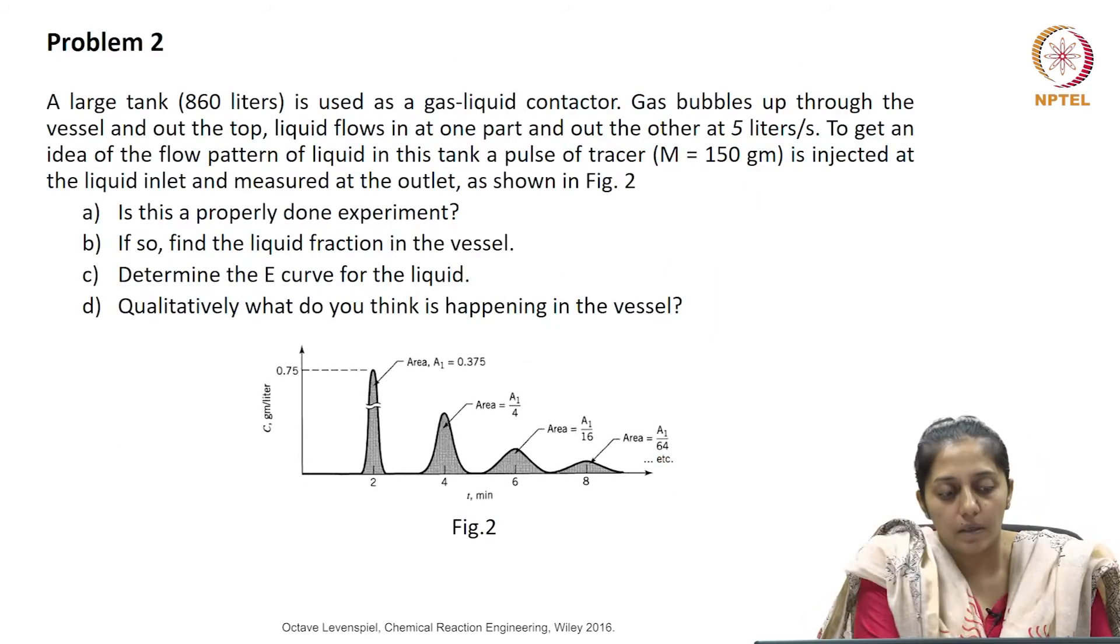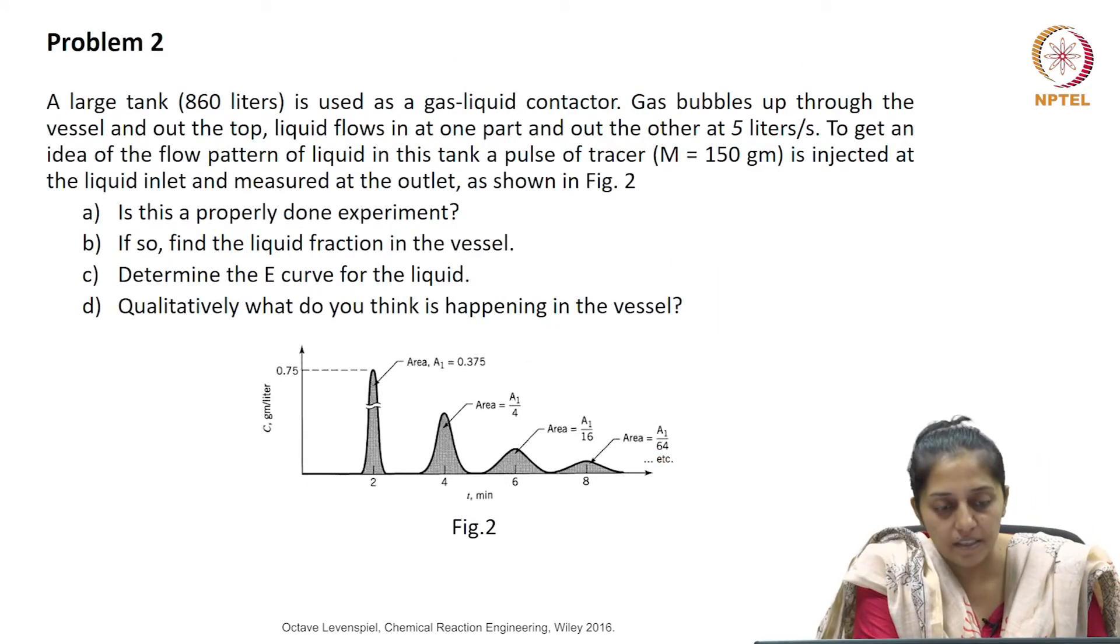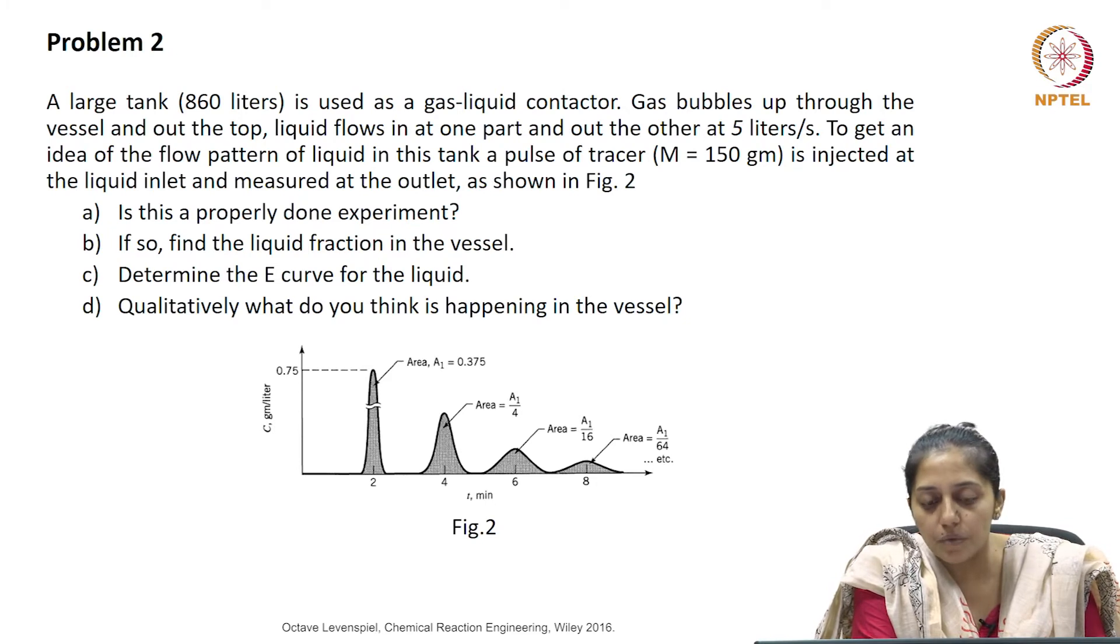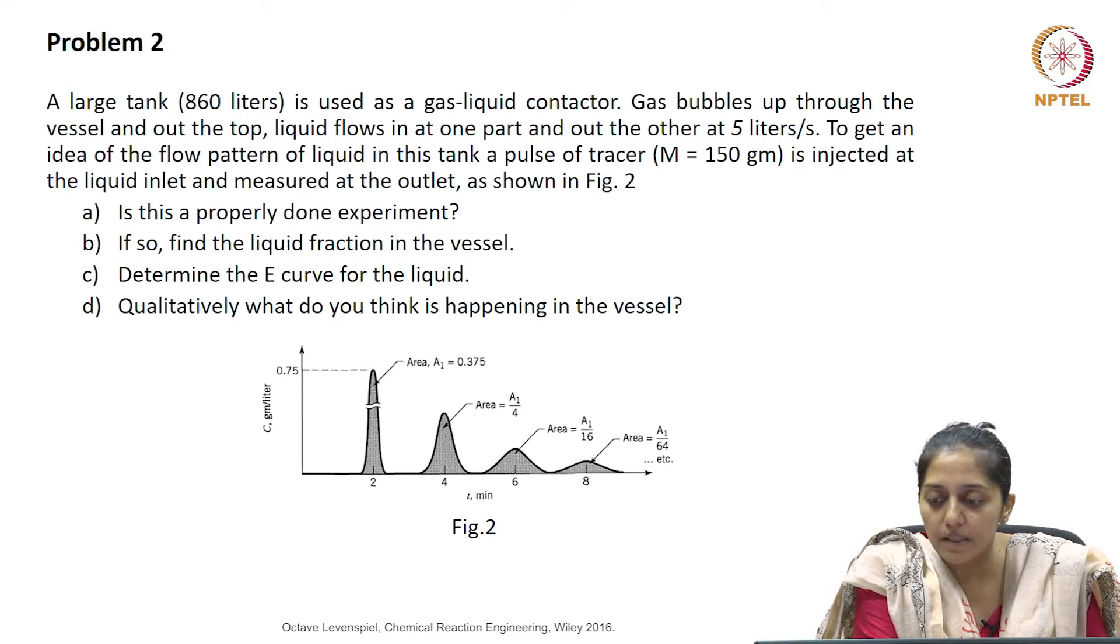Let us see problem 2. A large tank of 860 liters is used as a gas-liquid contactor. Gas bubbles rise up through the vessel and move out from the top. The liquid flows in at one part and leaves from the other at a flow rate of 5 liters per second.